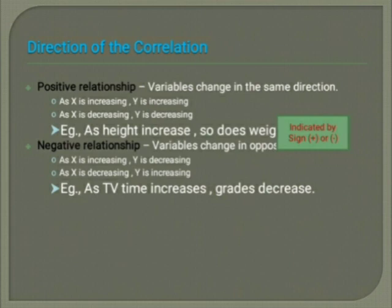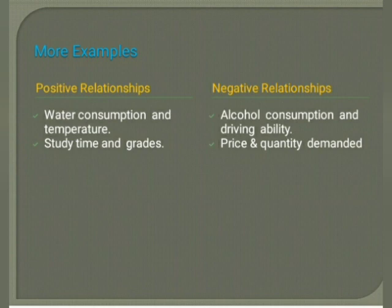As x is increasing, y is decreasing in the opposite direction. At the same time, as x is decreasing, y is increasing in the opposite direction. That is called a negative relationship. For example, as TV time increases, grade also decreases. More examples of positive and negative relationships follow.